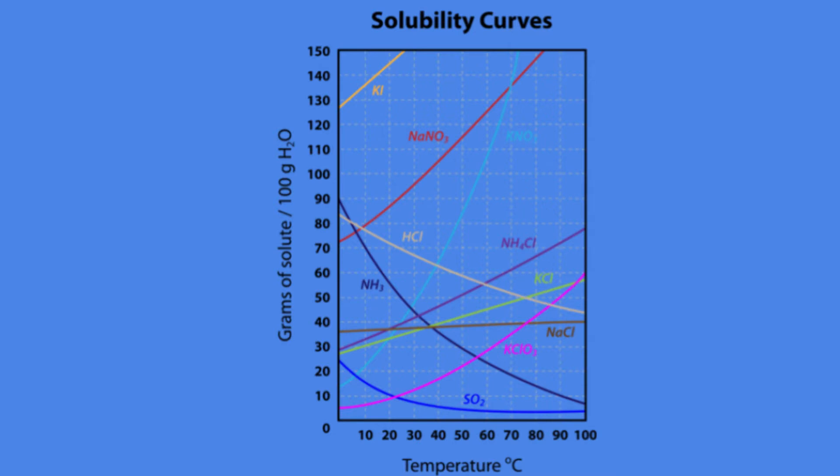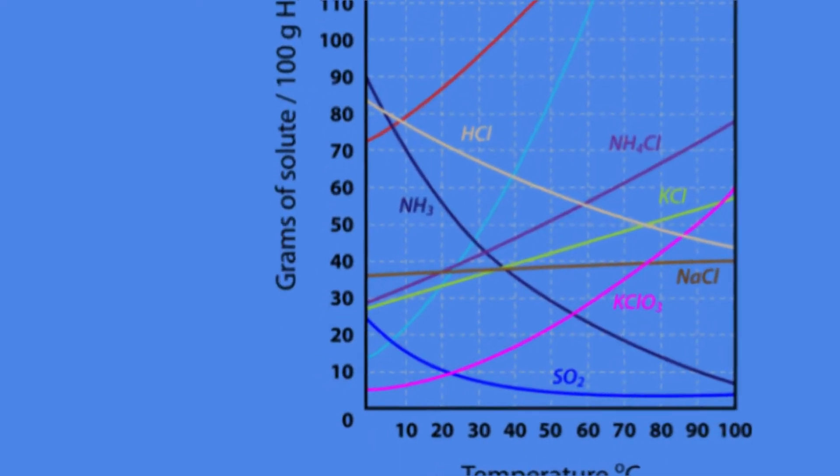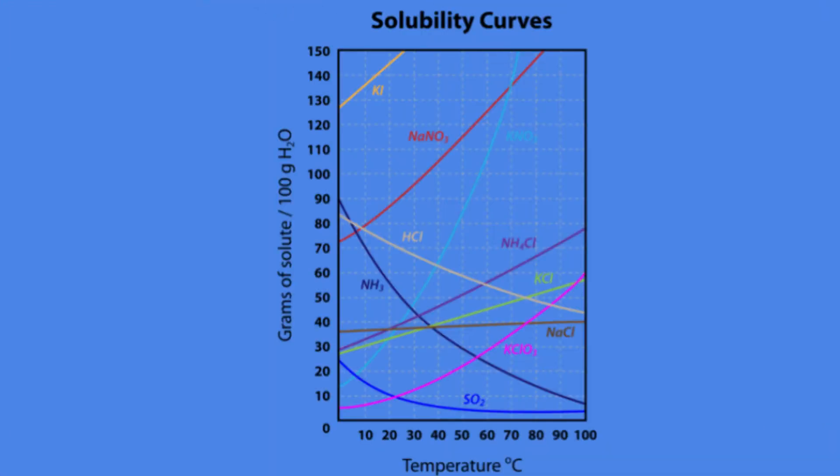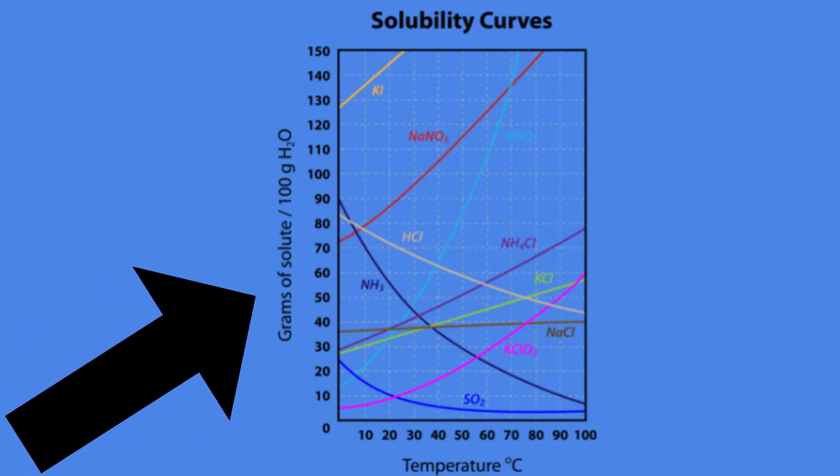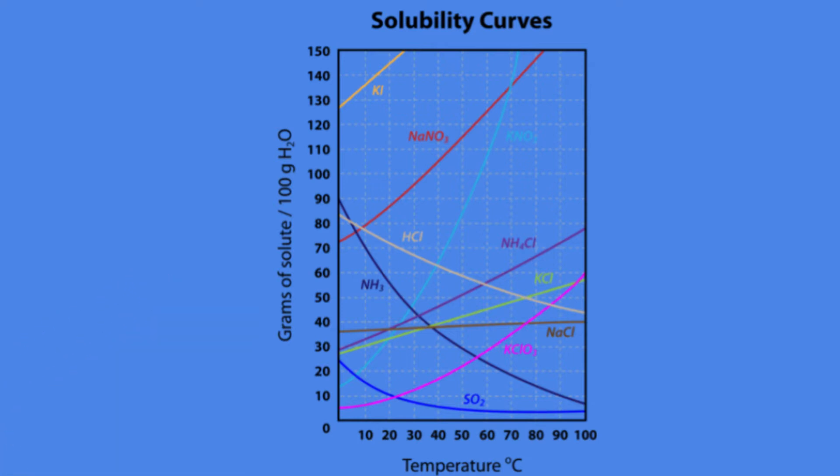Let's first take a look at what our axes are. What is the data on our y and our x-axis? When we take a look at the y-axis, remember the y-axis is our vertical axis, and the information here is grams of solute per 100 grams of H2O. So what this means is the amount of solute that water is able to dissolve.